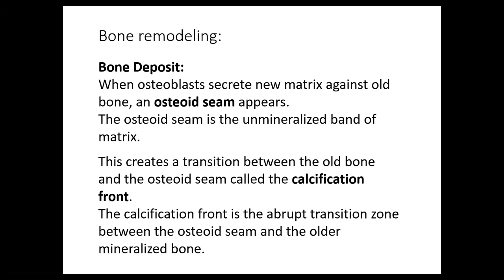Number thirteen: what happens during bone remodeling? Osteoblasts stimulate production by secreting collagen fibers; the blasts are the cells producing new bone matrix. An osteoid seam will appear — the osteoid seam is an unmineralized band of matrix. Osteoclasts, which break down both new and old bone matrix, reabsorb those structures into the bloodstream. This creates a transition between old bone and the osteoid seam, referred to as the calcification front — the abrupt transition zone between the osteoid seam and the older mineralized bone.